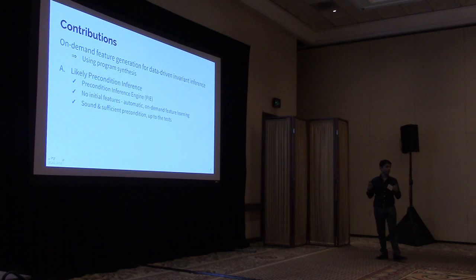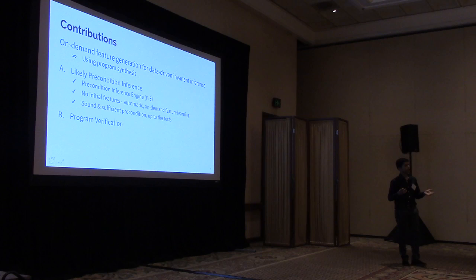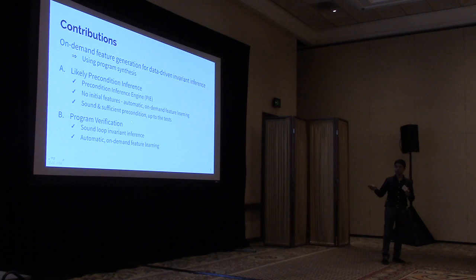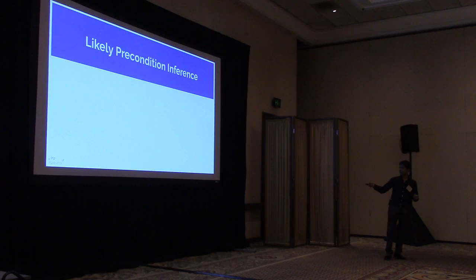Of course, we cannot guarantee anything beyond the set of tests. The second use case is traditional program verification, where you have a specification and want to verify that the program always meets it. We do this by inferring sound loop invariants, and we get the same guarantees: we start with no assumptions about features and automatically learn features on-demand. Our source code, benchmarks, and logs are all available on GitHub.